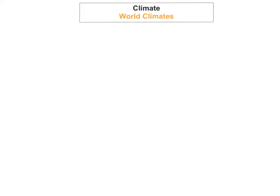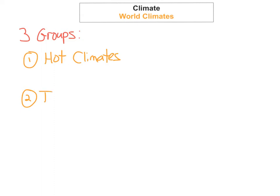Okay so world climates. You can group the world climates into three distinctive types. The first one is hot climates, the second one is temperate climates, and the third one is cold climates.